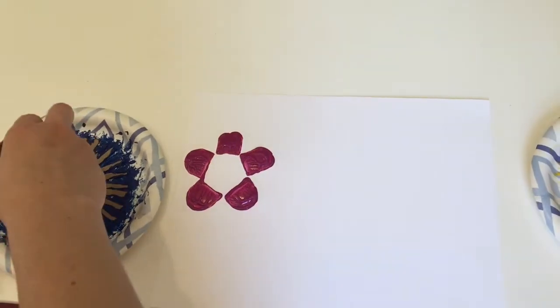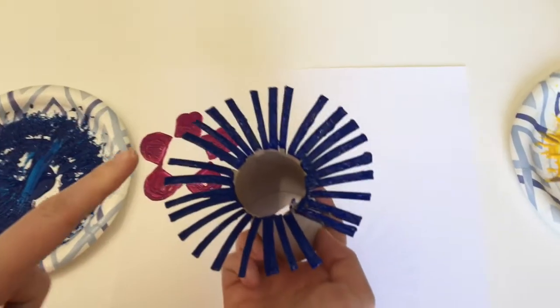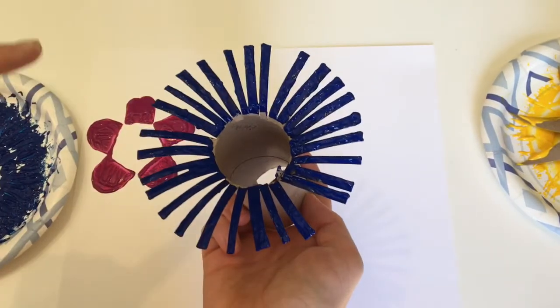Repeat this process with your other flower petal patterns and before you stamp them down, make sure that all the petals are covered with paint.